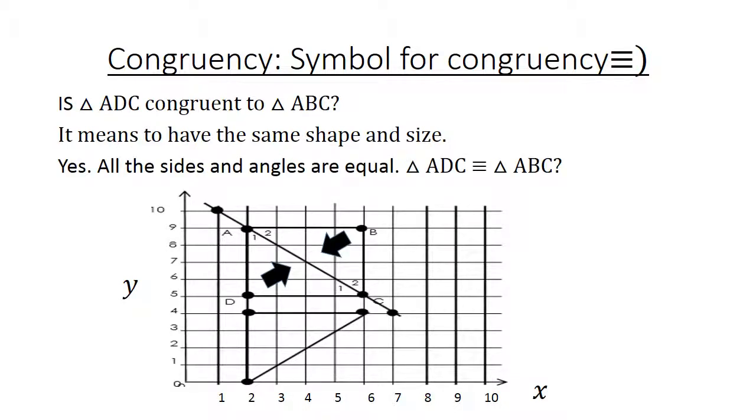All the sides and the angles are equal, so triangle ADC is congruent to triangle ABC. Congruency.